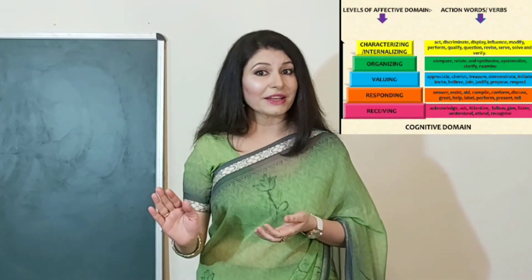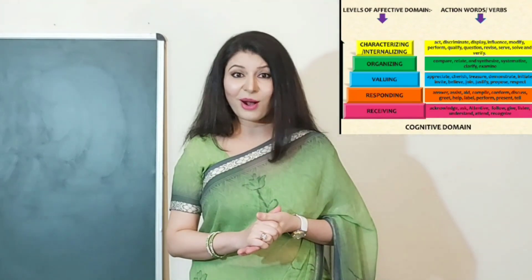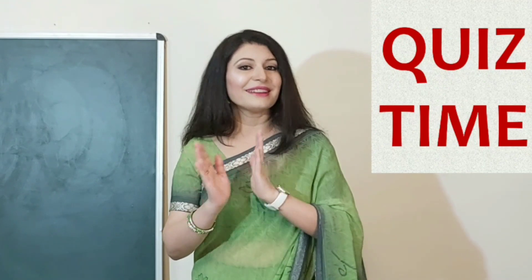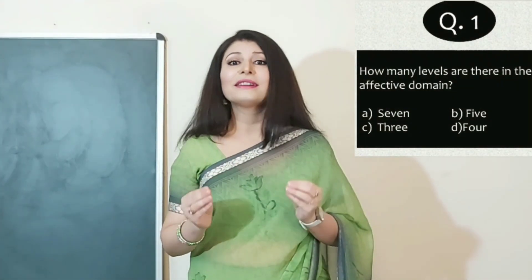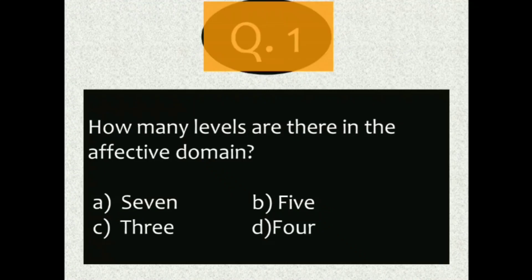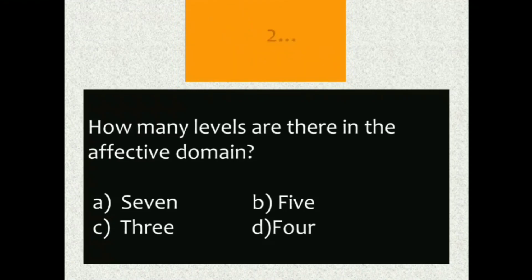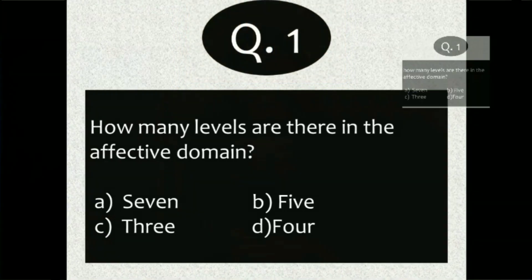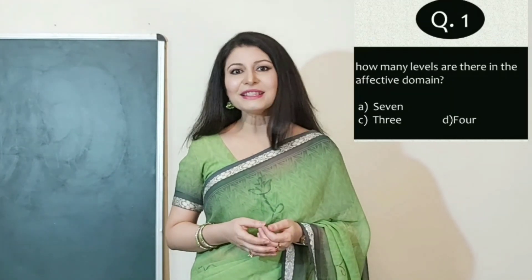Now that we have completed the affective domain of Bloom's taxonomy, here are a few questions to check your understanding. Question 1: How many levels are there in the affective domain? A) 7, B) 5, C) 3, or D) 4.